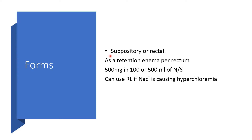Vancomycin can also be in suppository or rectal form, given as a retention enema per rectum. You might find 500 mg in 100 or 500 ml of normal saline. You can use Ringer's lactate if sodium chloride is causing hyperchloremia.